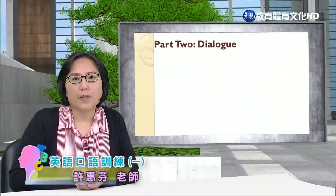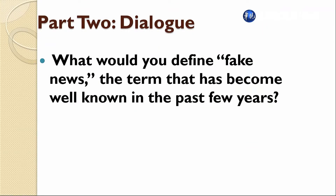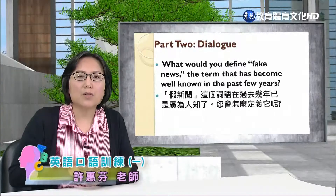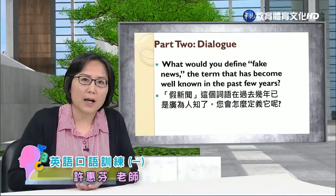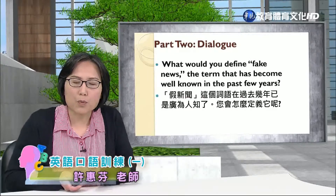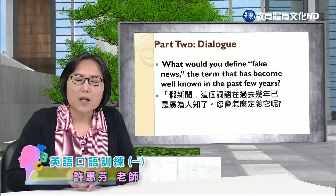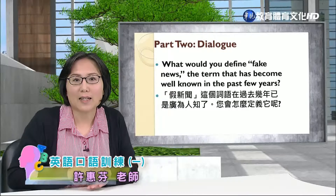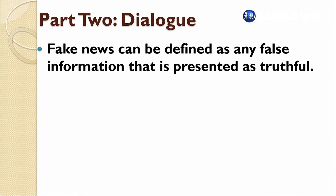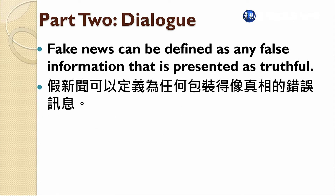Part 2, Dialogue. What would you define fake news? The term that has become well-known in the past few years. 假新闻这个词语在过去几年已经是广为人知了，那你会怎么定义它呢？Fake news can be defined as any false information that is presented as truthful. 假新闻可以被定义为任何包装得像真的模样的那个讯息，这是比较学理上的学术上的一个定义.